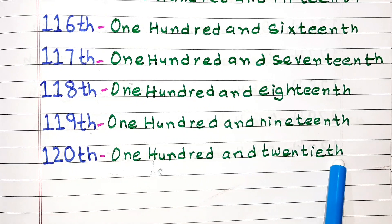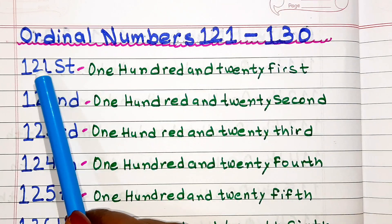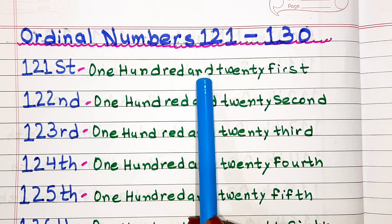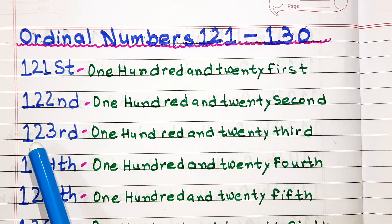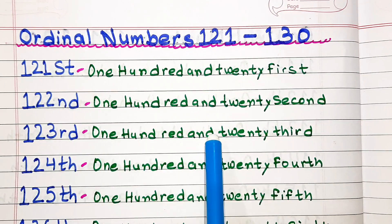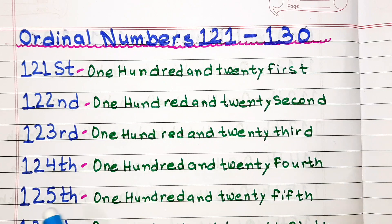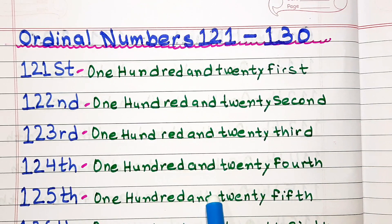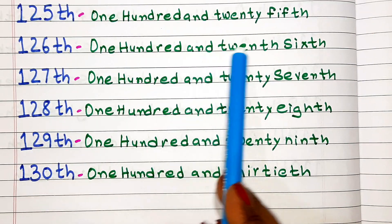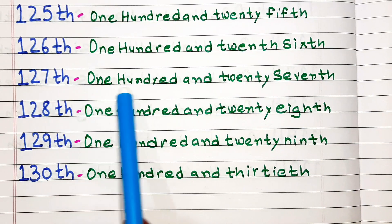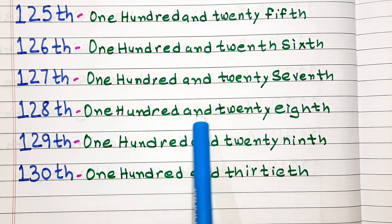Ordinal numbers from 121 to 130. 121st. 122nd. 123rd. 124th. 125th. 126th. 127th. 128th.